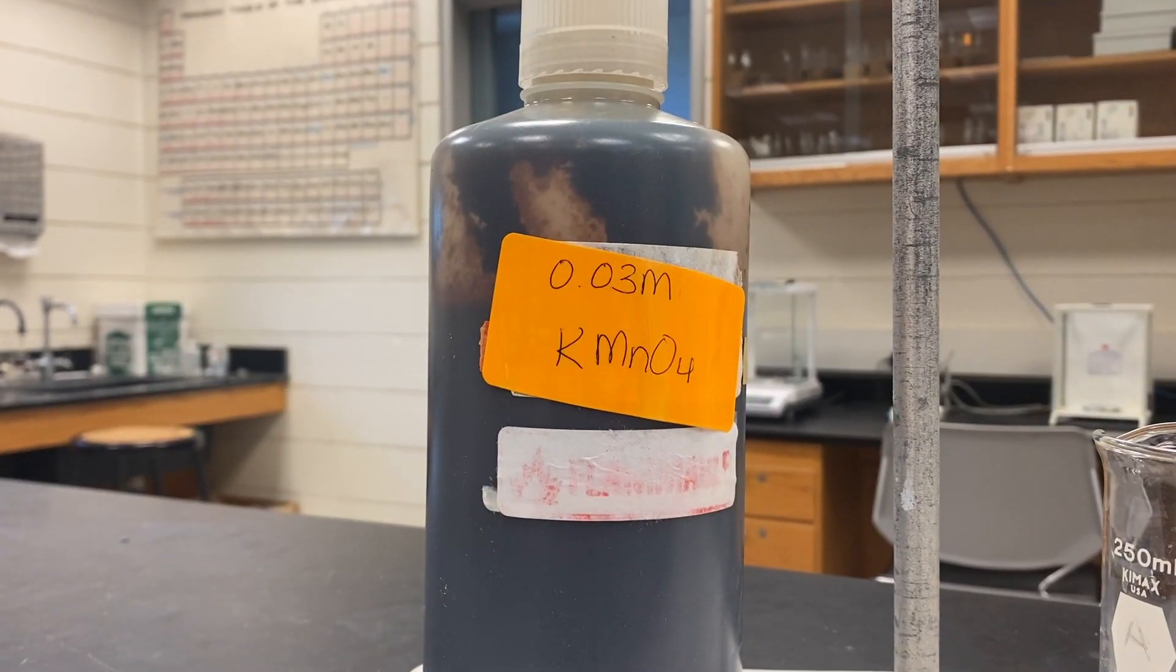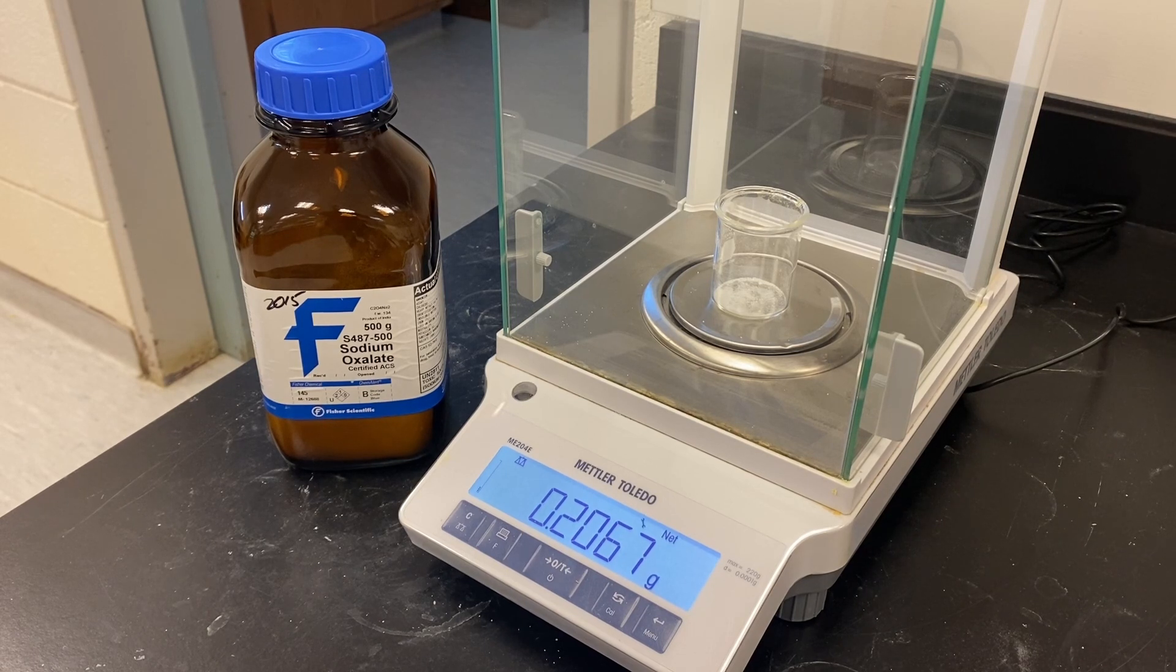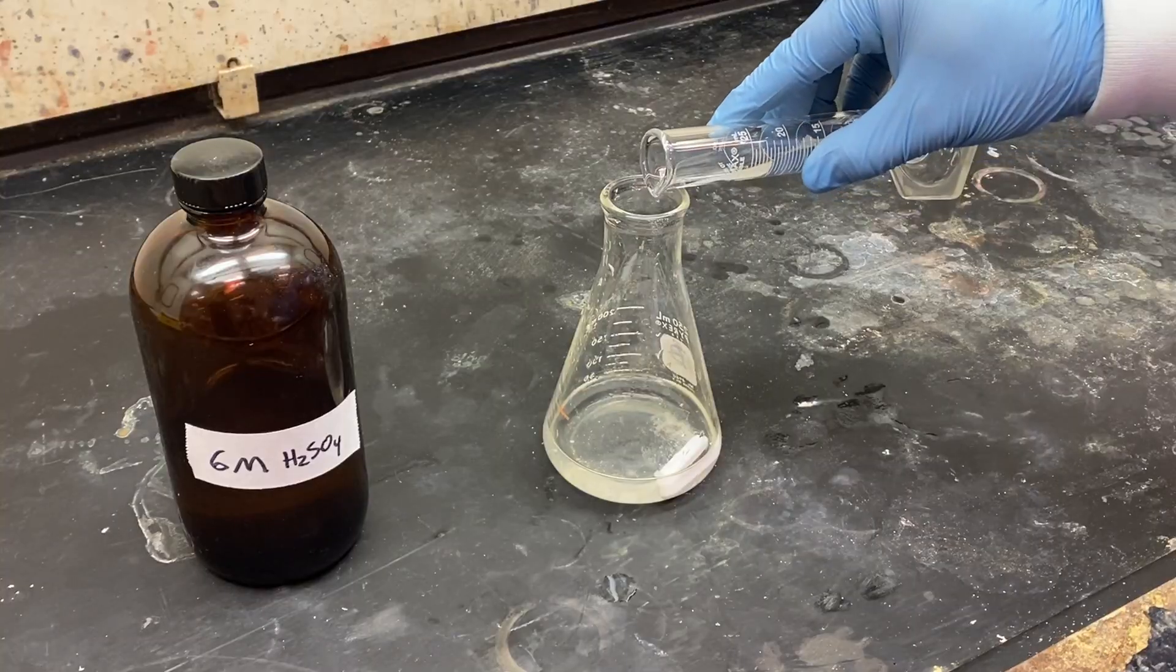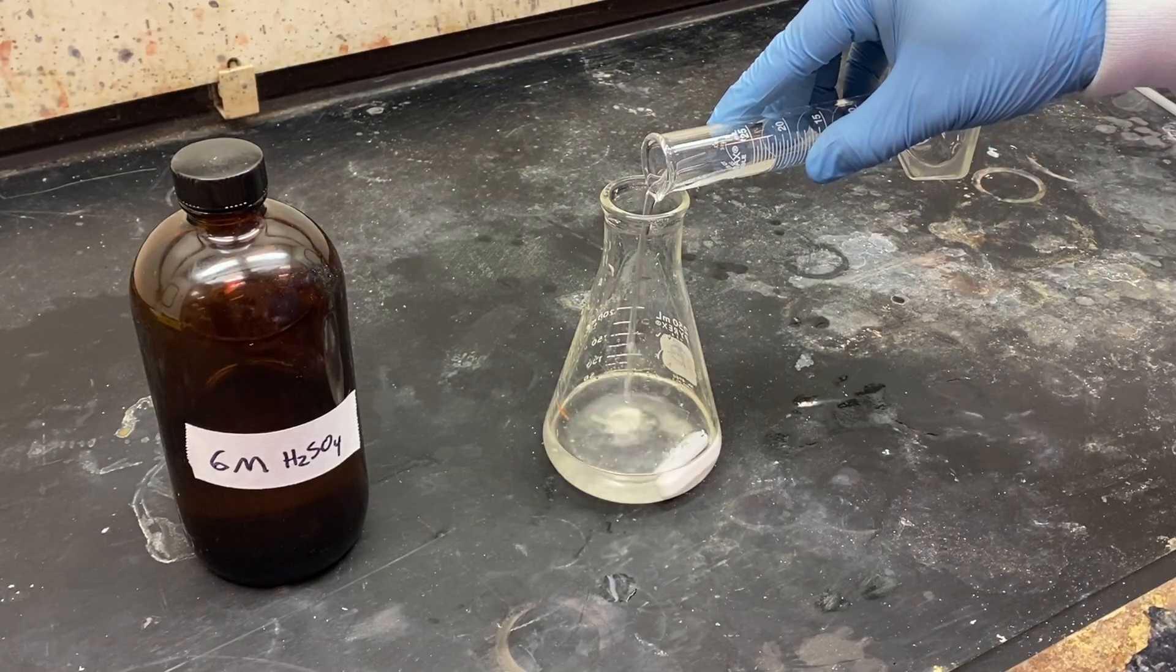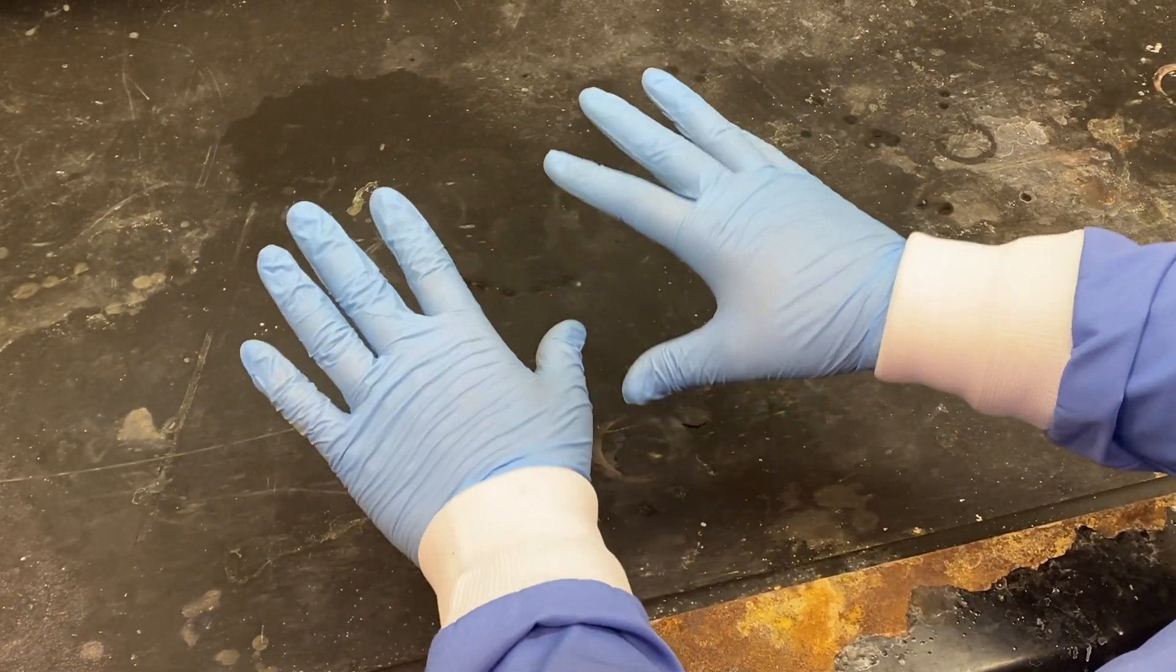The potassium permanganate solution needs to be standardized. Around 0.2 grams of sodium oxalate is used to standardize this solution. When dissolving the solid, it is important to first add the water and then the sulfuric acid for safety reasons. Sulfuric acid is a concentrated and strong acid and you must be wearing gloves at all times when handling.